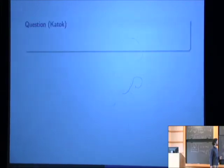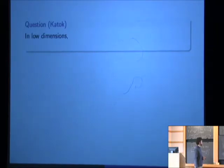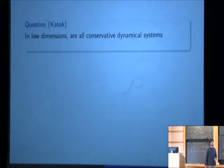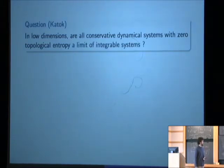I'm starting with this question of Anatoly Katok. He asks the following fairly general question: In low dimensions, which for dynamical systems means two for maps or three for flows, are all conservative dynamical systems, for example area or volume preserving, with zero topological entropy a limit of integrable systems? And he leaves it open for you to interpret what integrable means and what limit means.